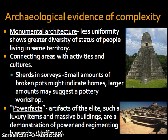We also see power artifacts — artifacts of the elite. Luxury items in massive buildings are a demonstration of power and entrenched hierarchy. Social complexity was readily apparent across the globe as of 5,000 years ago in both the new and old world. Many of these examples are featured in A History of the World, a BBC program available through a link on Bolt that you are required to view for an upcoming discussion.